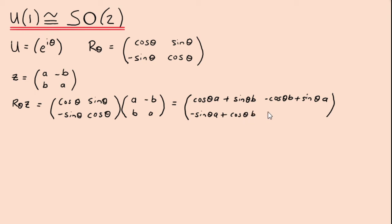Completing the matrix multiplication, the result is a new complex number. We can write that as [a', -b'; b', a'], where a' and b' are the transformed real and imaginary parts resulting from applying the rotation.